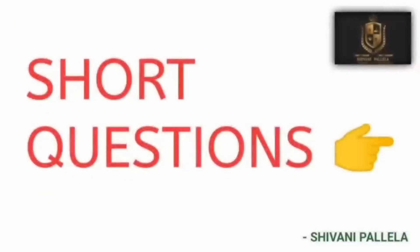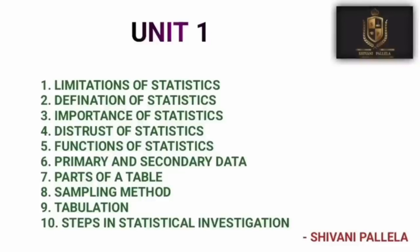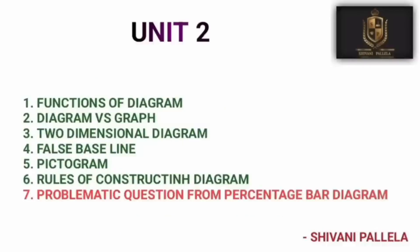First we will discuss the short important questions helpful for Part A to score 20 marks. For theory questions, write a minimum of one and a half sides. From Unit 1: limitations of statistics, definition of statistics, distrust of statistics, and parts of a table — these four are the most important and repeated questions. We can expect one compulsory question from these four in Part A. From Unit 2, the problematic question will come from diagrams.